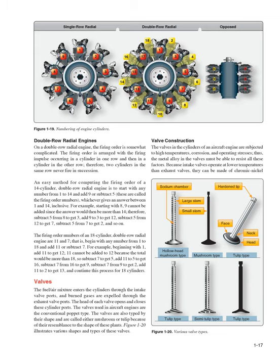For the 14-cylinder example: starting with 8, subtract 5 to get 3, add 9 to get 12, subtract 5 to get 7, subtract 5 to get 2, and so on. For the 18-cylinder example beginning with 1: add 11 to get 12; since 11 cannot be added to 12 without exceeding 18, subtract 7 to get 5; add 11 to get 16; subtract 7 to get 9; subtract 7 to get 2; add 11 to get 13; and continue this process for all 18 cylinders.